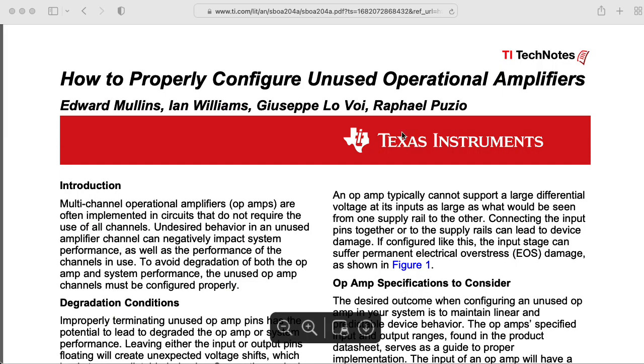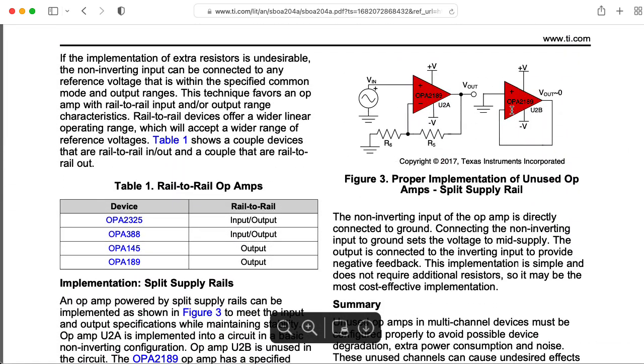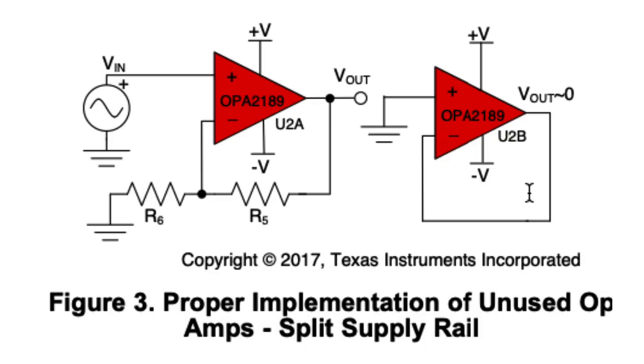So what should you do? I often find it's a good idea to ask Texas Instruments. So the thing you want to do is to set up the op-amp so that it's a voltage follower that's following ground. Now, that assumes you have a bipolar power supply.